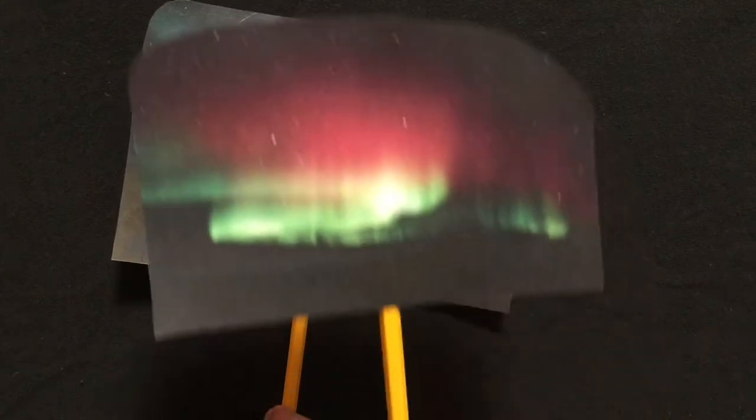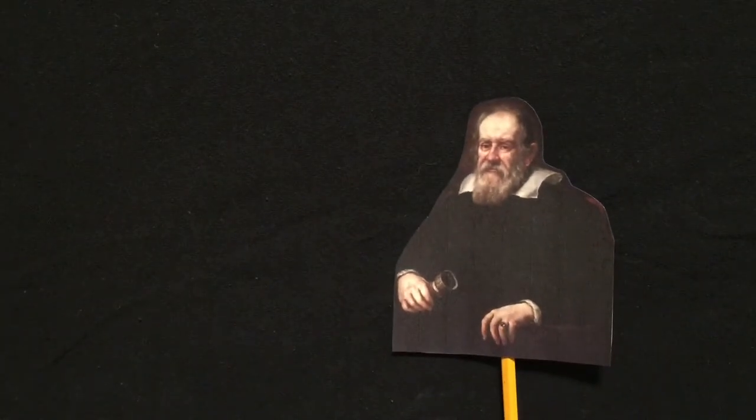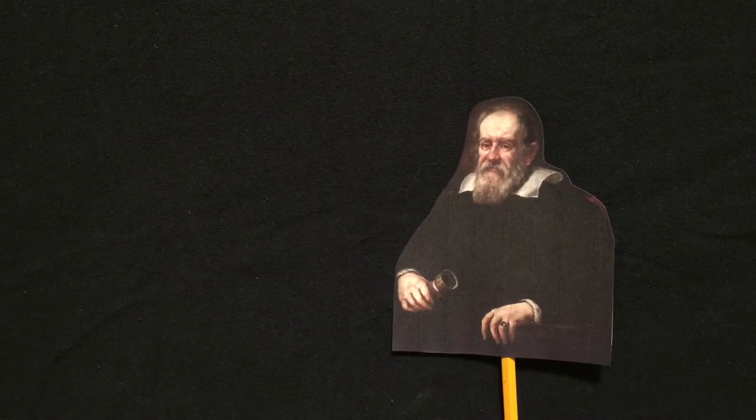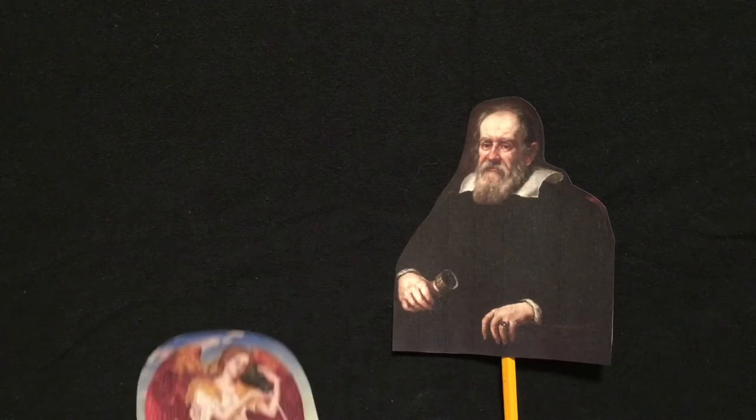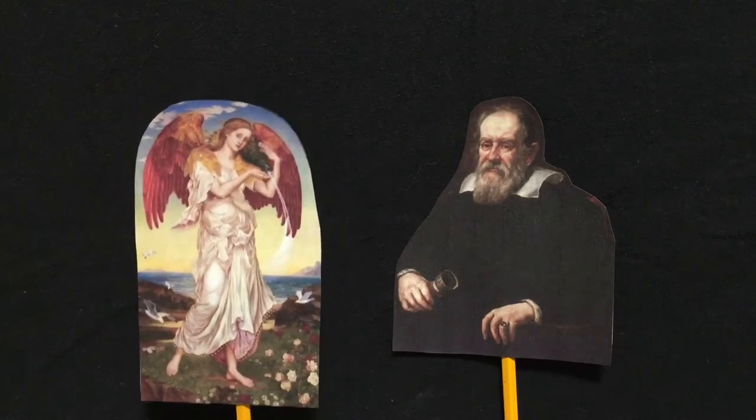Long ago, cultural groups believed myths of spirits in the sky, but in 1619, Galileo hypothesized that these mysterious lights were produced by sunlight reflecting from the atmosphere and named the phenomenon aurora after the goddess of dawn.